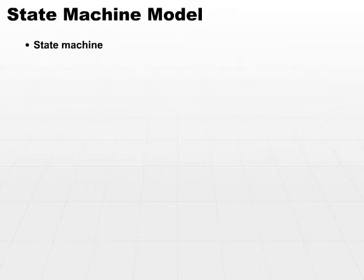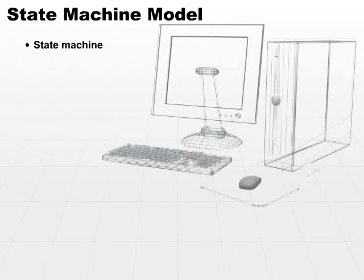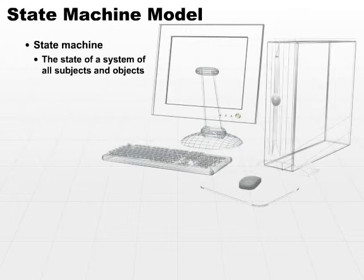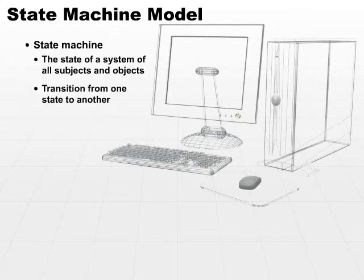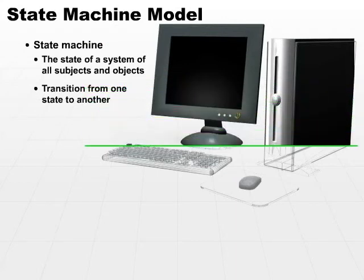We'll start with the state machine. The state machine model is built on a mathematical model of a state machine. In that context, a state machine shows the state of all objects at one particular point in time, and it shows the transitions from one state to another. In the context of a security model, the state machine specifies the state of a system of all subjects and objects at a particular point in time, and then maps the transition from one state to another in a controlled fashion.